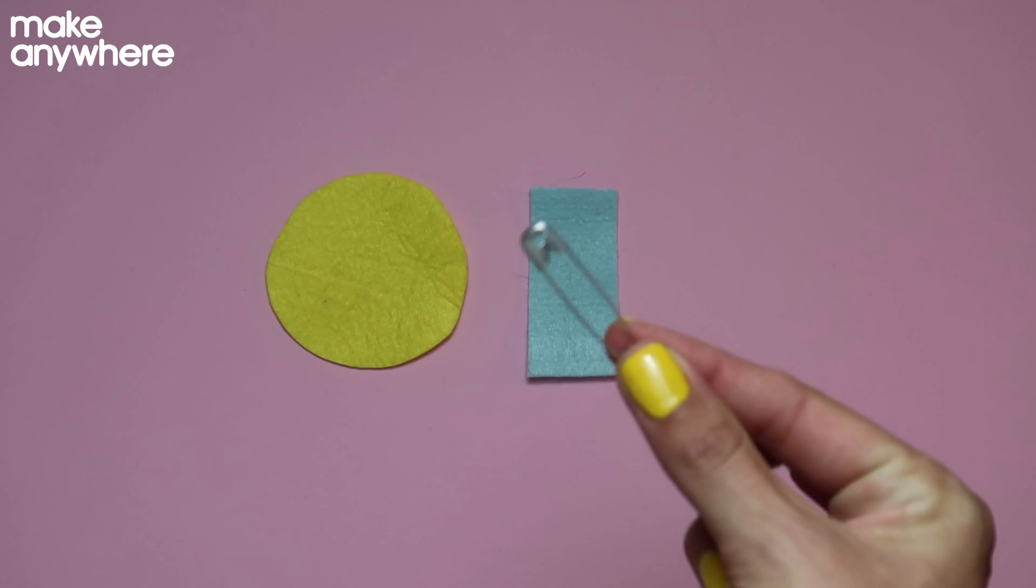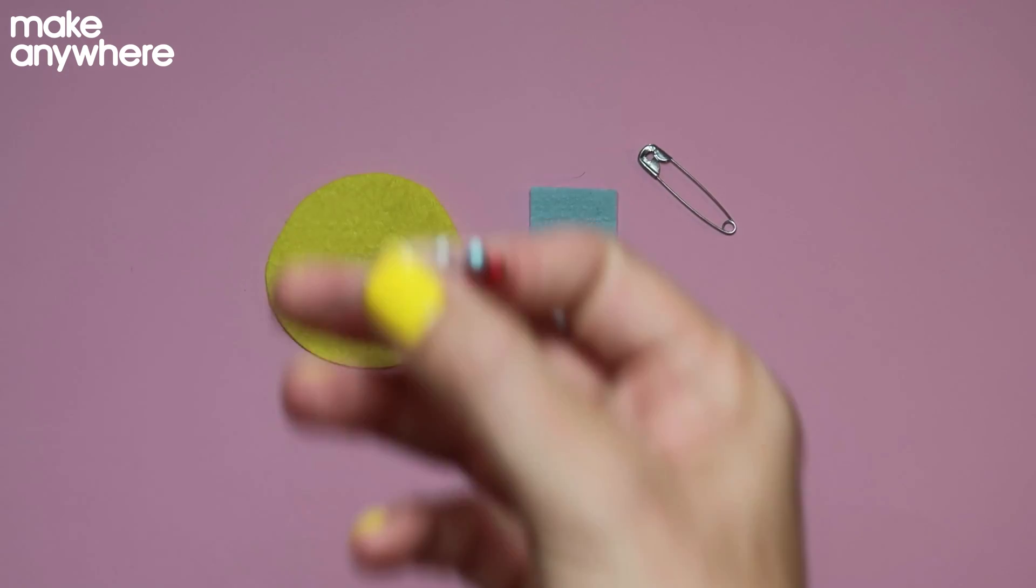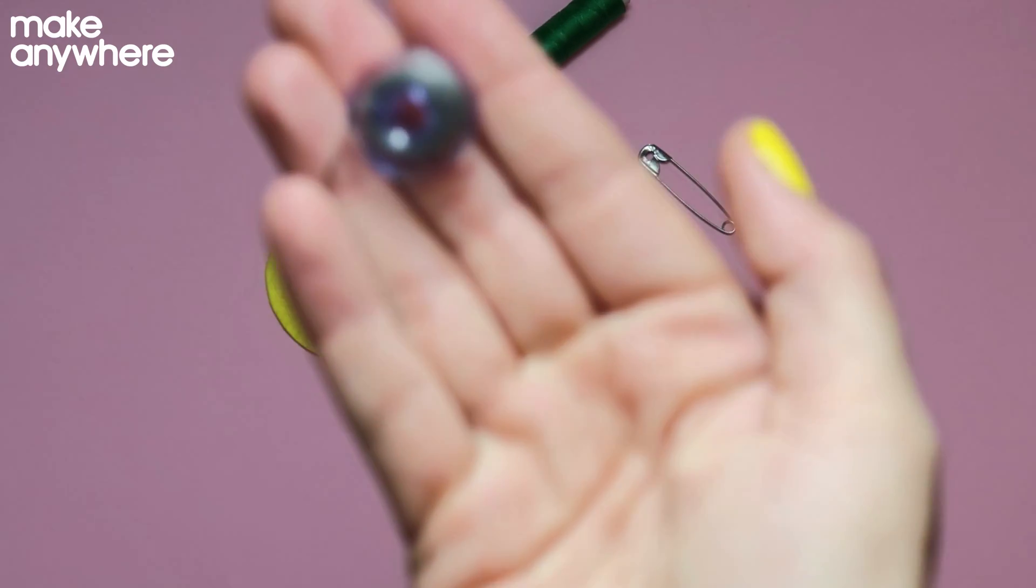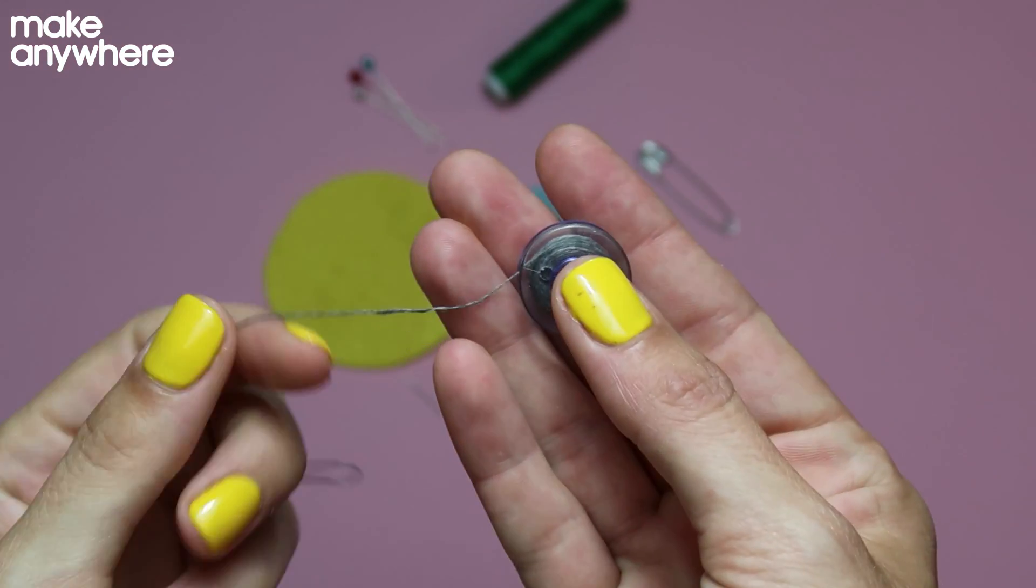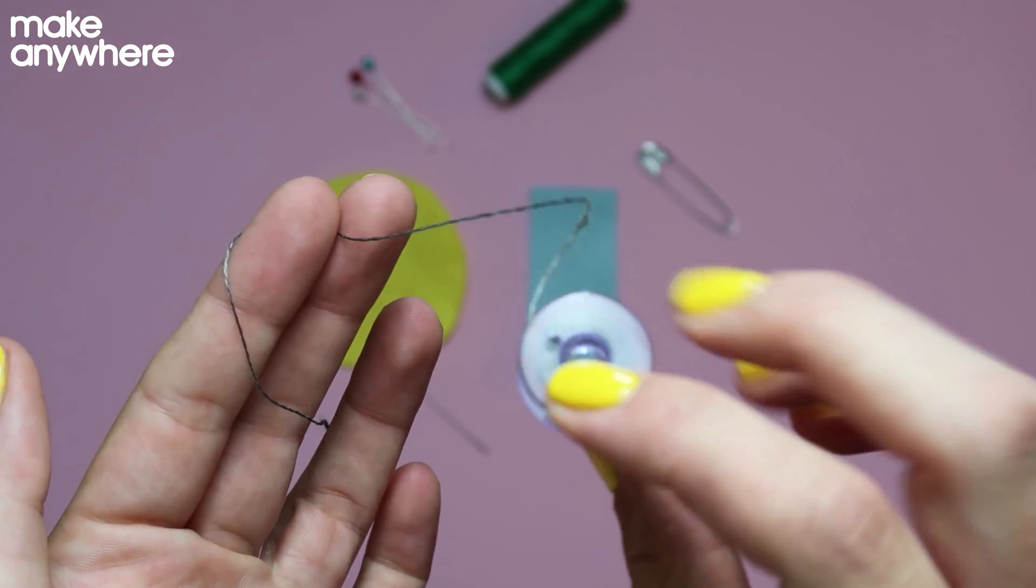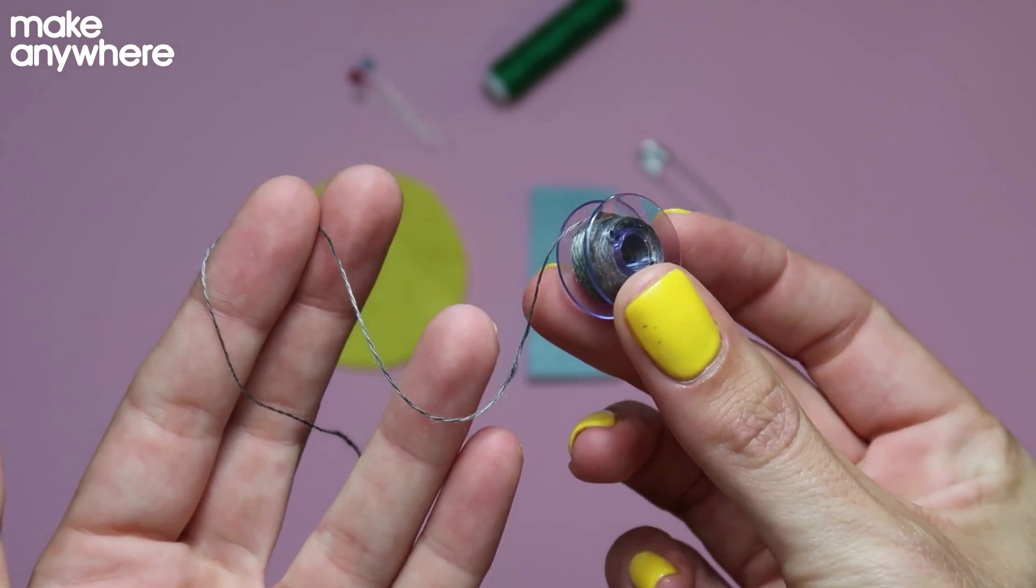You'll also need a safety pin, a needle, some pins, some thread, and some conductive thread—special thread that lets electricity run through it. This will connect from your power source to your components, your LEDs and resistor.